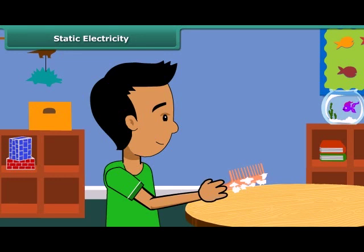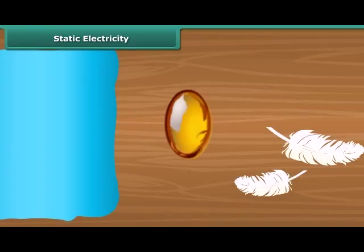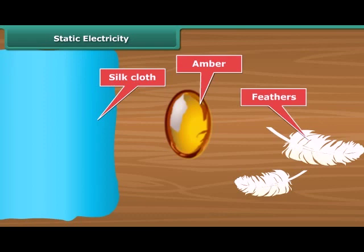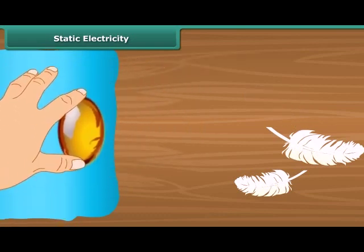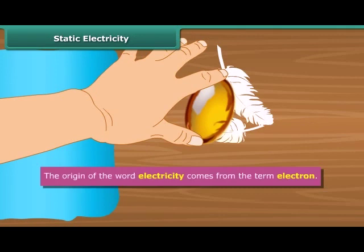This was first noticed by a Greek man named Thales over 2,500 years ago. Thales found that amber attracted tiny feathers after it was rubbed with silk cloth. This was due to static electricity. The origin of the word electricity comes from the term electron.